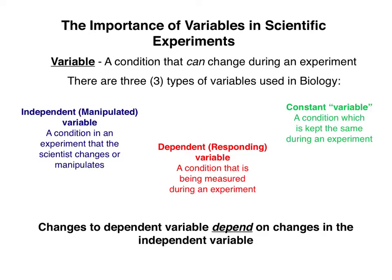Once you have hypotheses down, it's important to move on to the next part of understanding the scientific method. You know what variables are — you know that variables are conditions that can change during an experiment, and you know that there are three types of variables to consider when planning a scientific experiment: there's your independent variable, your dependent variable, and your constant variables — 'variable' in quotation marks, as you can see.